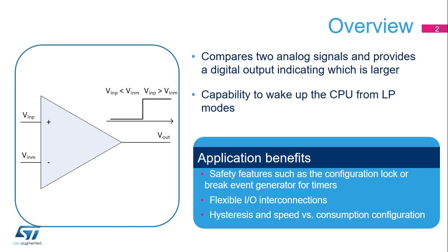The two comparators inside the STM32 microcontroller provide a binary output which indicates if the analog voltage on the plus input is larger than the voltage on the negative input. It allows the MCU to react when the analog signal crosses a predefined threshold. The comparator continuously monitors voltage, in contrast to an analog-to-digital converter which operates in sampled mode.